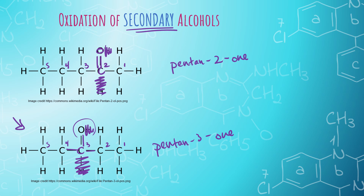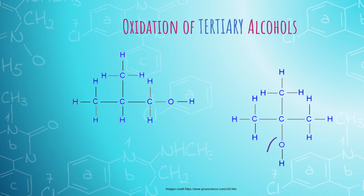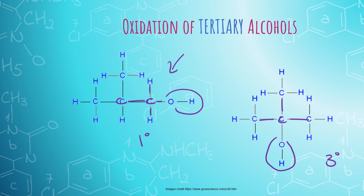Let's try to oxidize a tertiary alcohol. Tertiary alcohols are those where the hydroxyl group is bound to a carbon that's bound to three other carbons. Note that this other molecule is not tertiary even though it has many branches — the hydroxyl group is bound to a carbon bound to only one other carbon, making it actually a primary alcohol. When I oxidize alcohols, I steal hydrogens. The carbon of a tertiary alcohol has no hydrogens to steal, which means that tertiary alcohols cannot be oxidized. No reaction occurs.